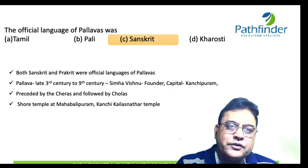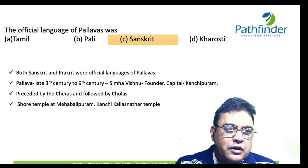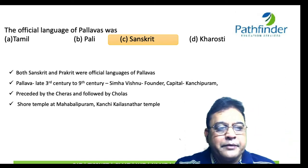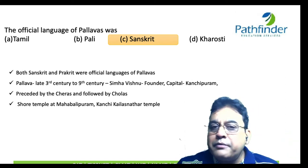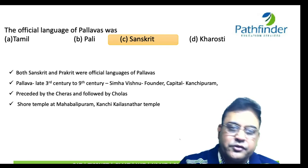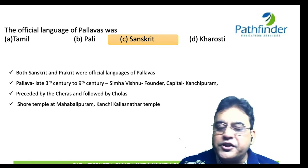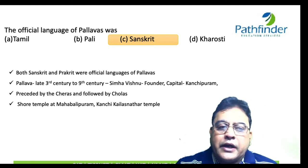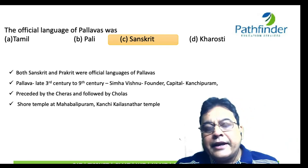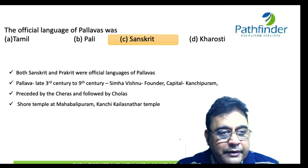Both Sanskrit and Prakrit were official languages of the Pallavas, preceded by the Cheras and followed by the Cholas. Famous structures built by them include the Shore Temple at Mahabalipuram, which is now almost in ruins, and the Kailasanathar Temple at Kanchipuram.